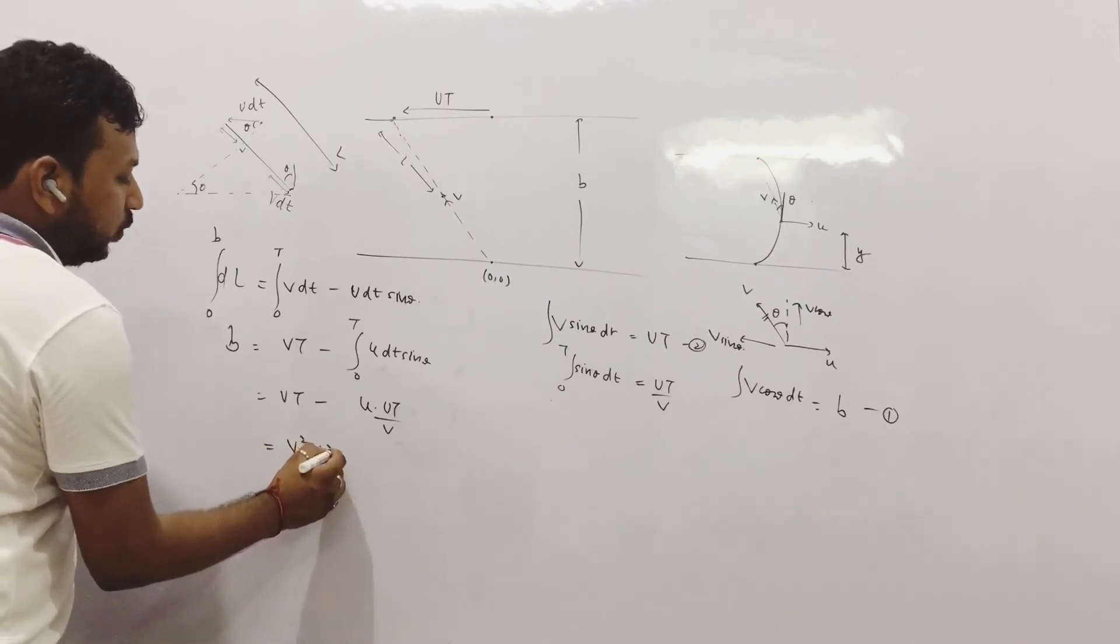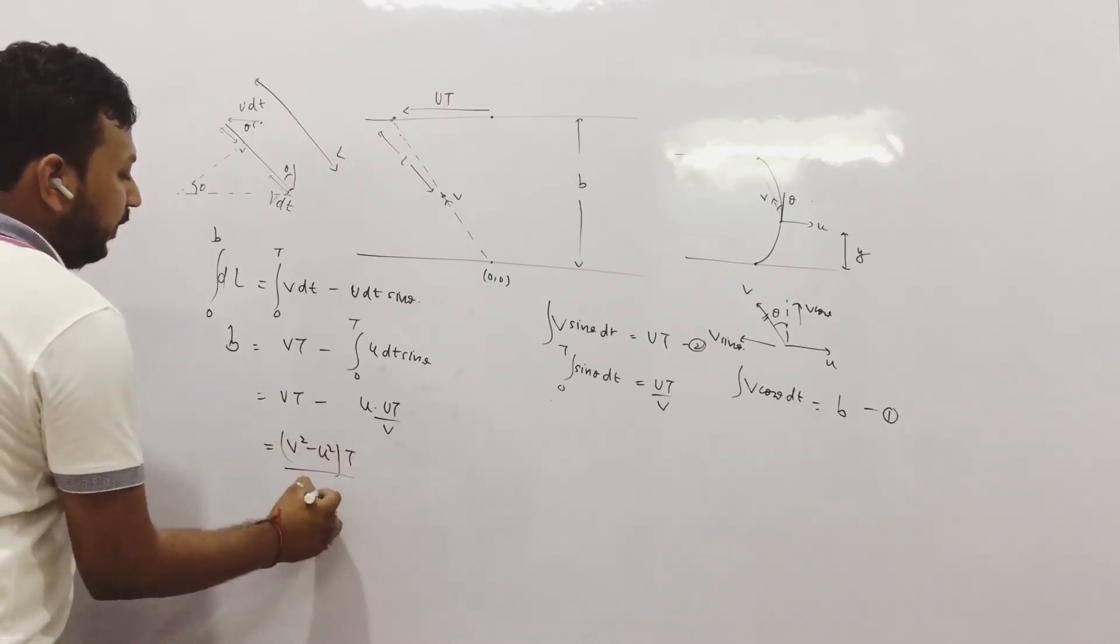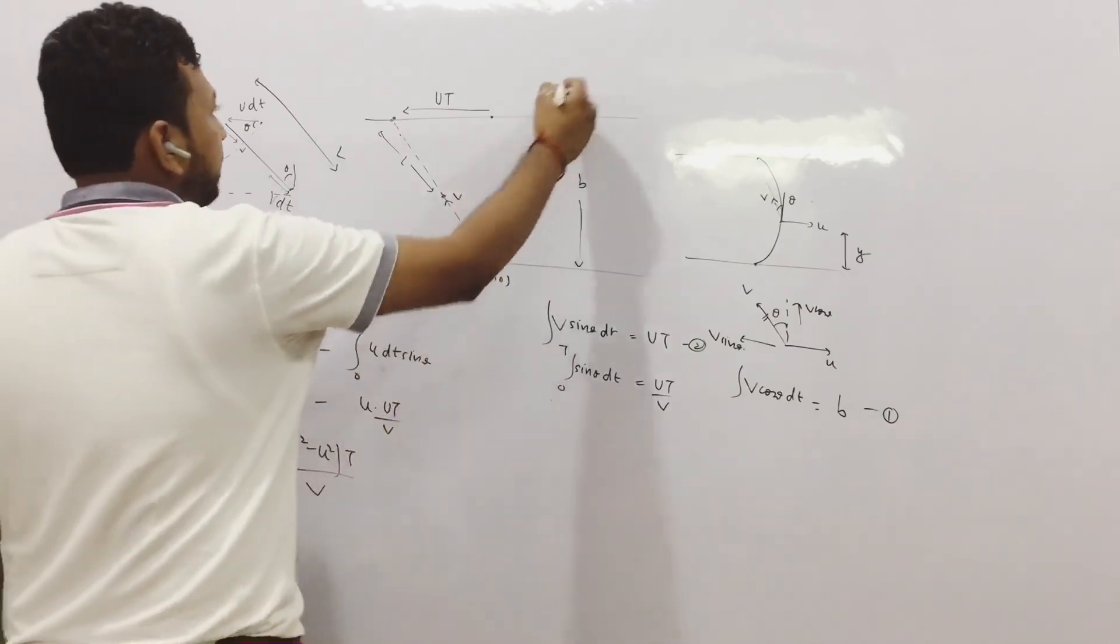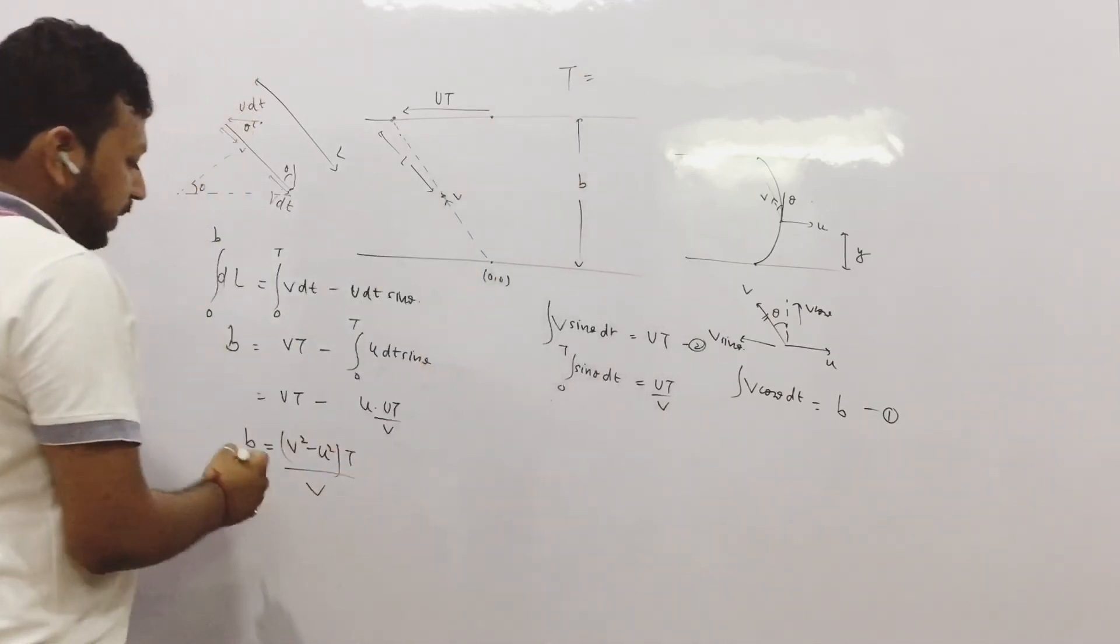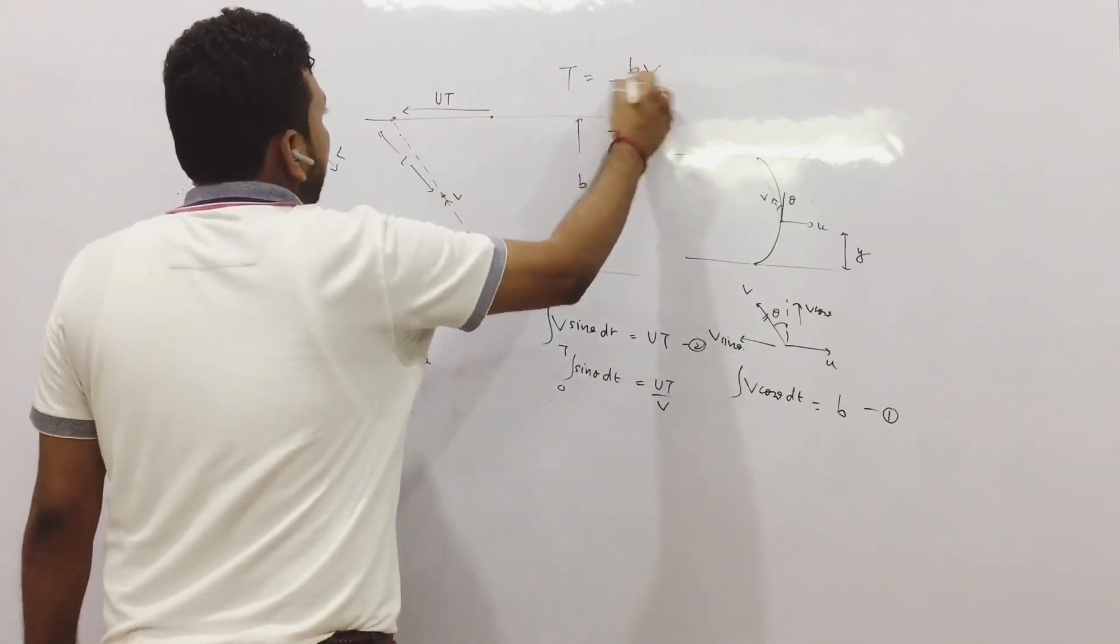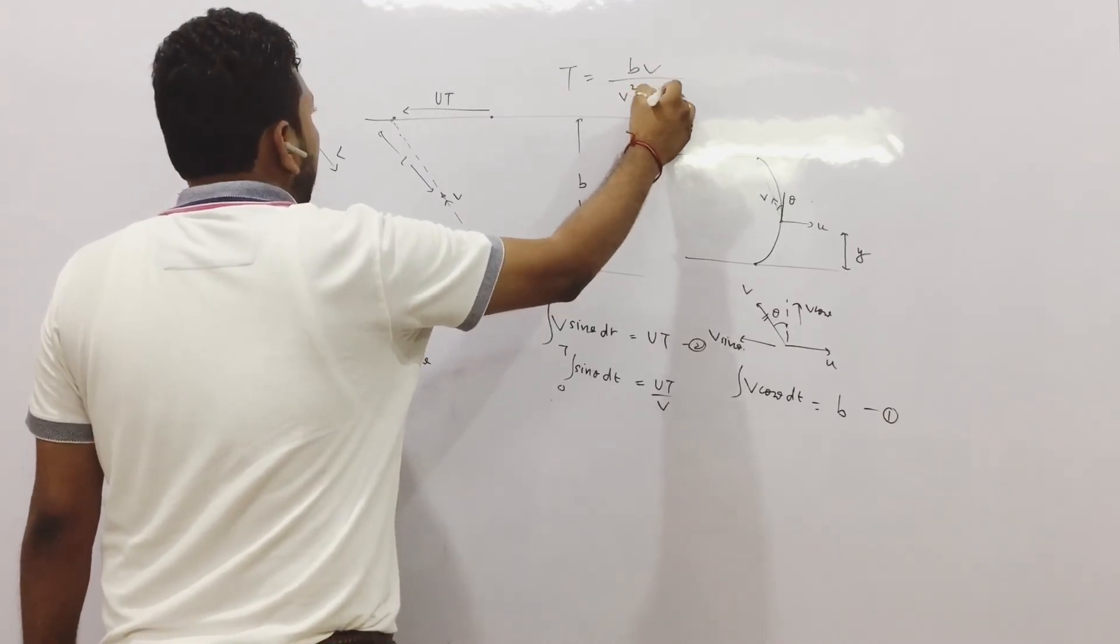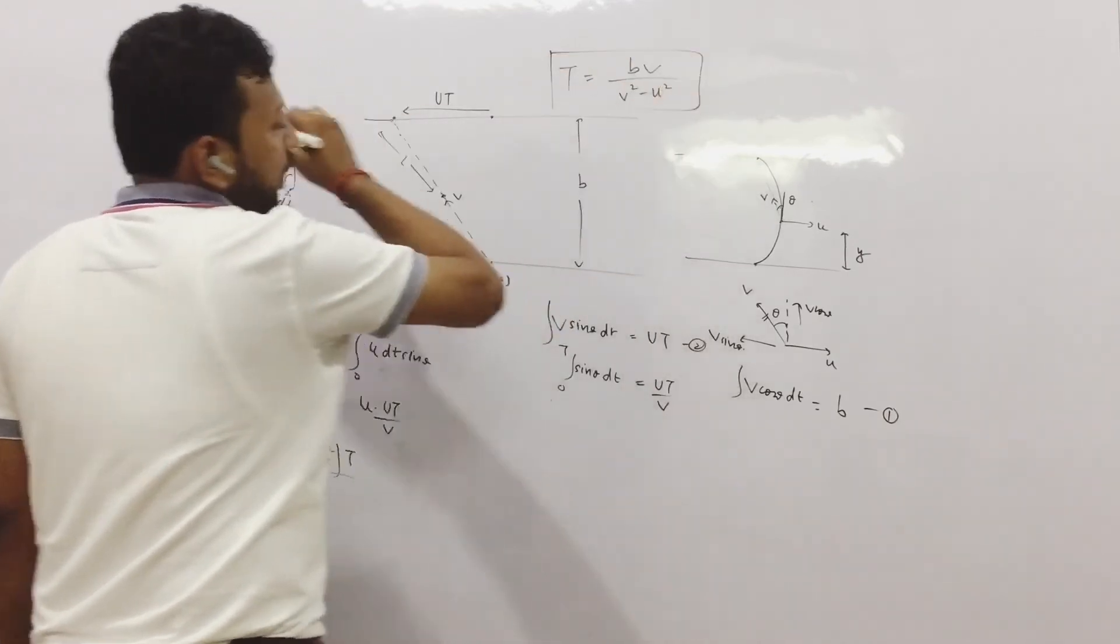It is b squared minus u squared into t upon v is b. Finally what is the time? Time is bv divided by v squared minus u squared.